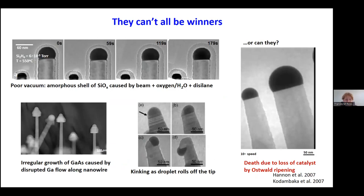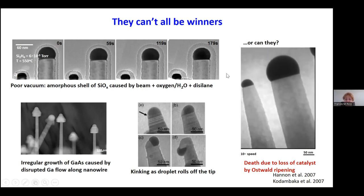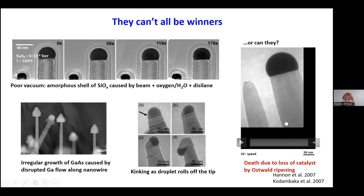I don't want to give the impression that everything works first time, because most of the time it fails for some reason. For example, if the vacuum in the microscope isn't clean, you get silicon dioxide caused by the disilane reacting with oxygen in the background, which will completely cut off the growth process. The vacuum is important. You can get irregular growth, kinking, and changes in the catalytic droplet size resulting in the death of the nanowires. Here we have Ostwald ripening — gold diffusing away down the length of the nanowire and up to the droplet in neighboring nanowires. But this gives us a lot of information about surface mobility and the physical phenomena that control growth. This turned out to be one of our most productive failures.